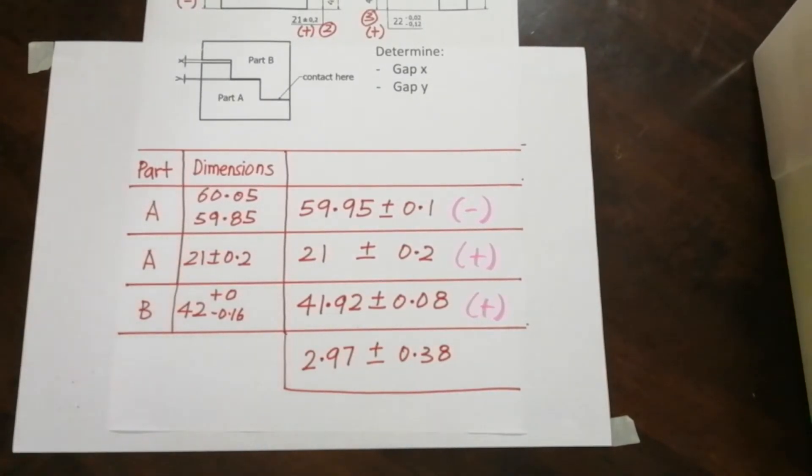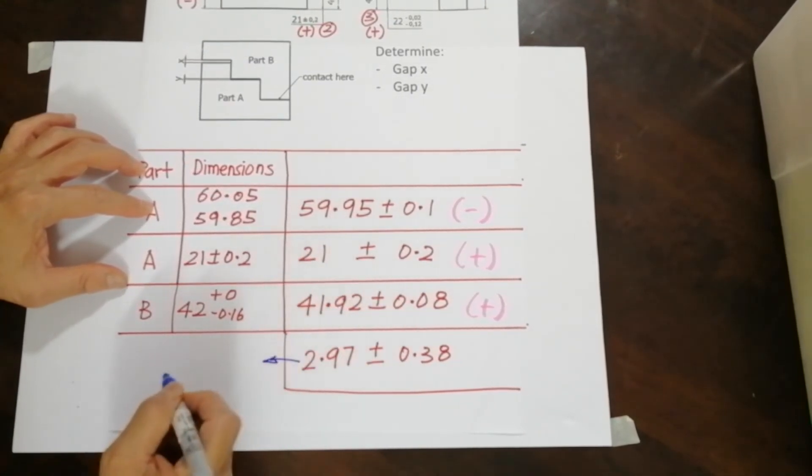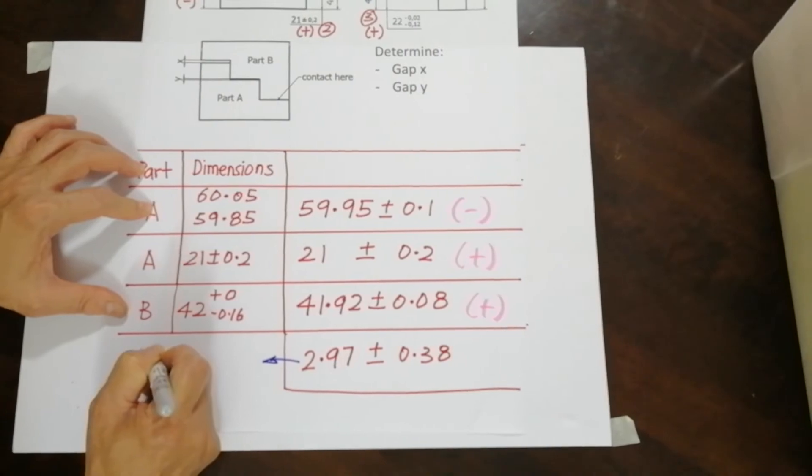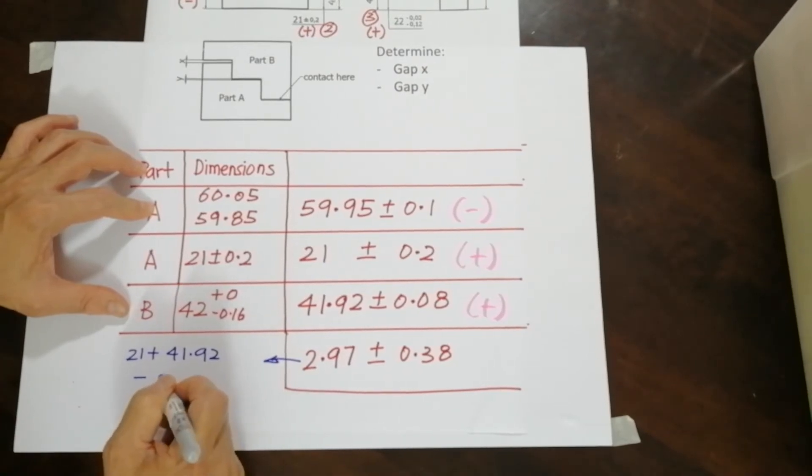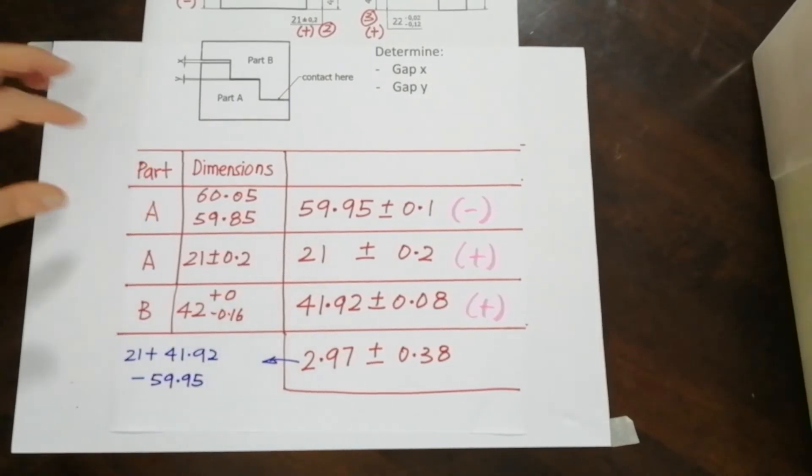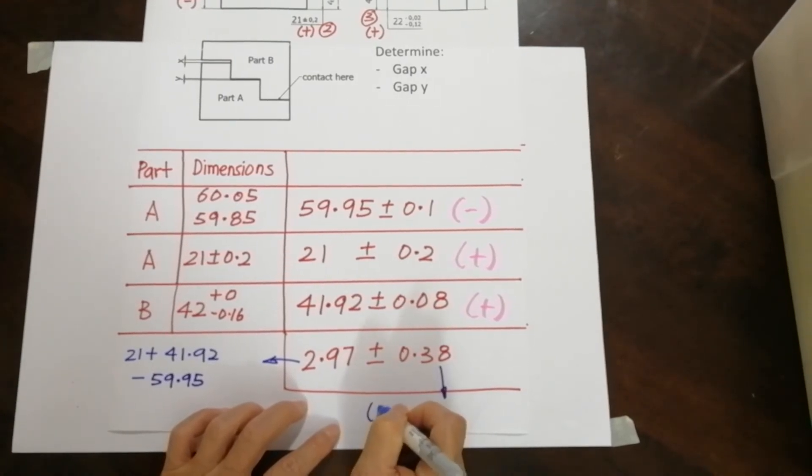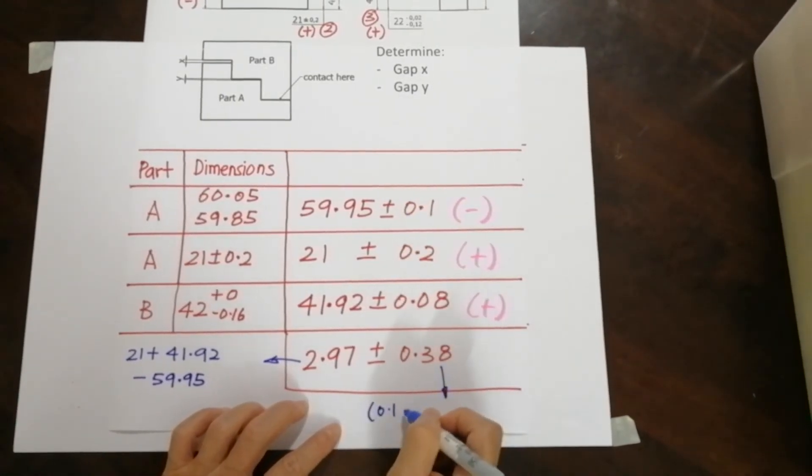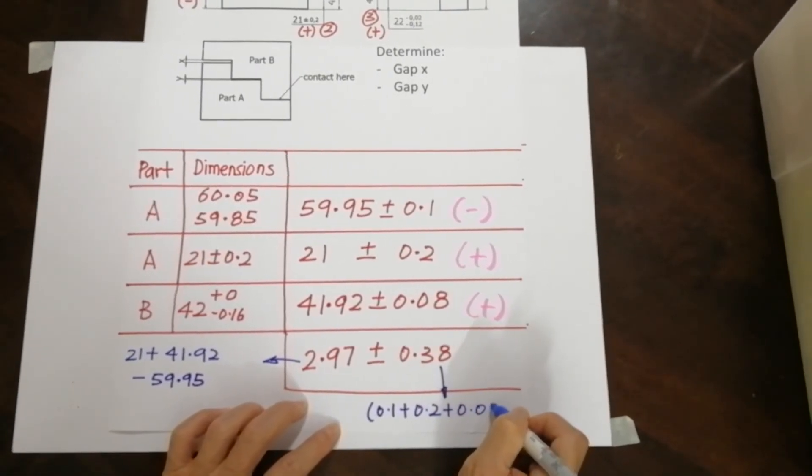Now, the key thing is that in case you did not follow earlier, how do we get the value? I will just put it here. So the number we get it from 21 plus 41.92 subtract 59.95. And how did I get this value? This value is 0.1 plus 0.2 plus 0.08.